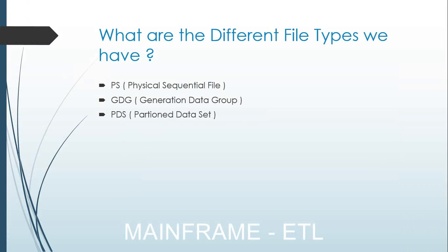Let's look at the different file types on the mainframe system. The first one is the PS file, also called a physical sequential file or flat file. Next is GDG, the generation data group, which has a set of versions. Then there's PDS, the partition data set. As an ETL developer or QA, this is the first basic thing you need to understand: where data is stored on the mainframe — in a PS file or a GDG file.